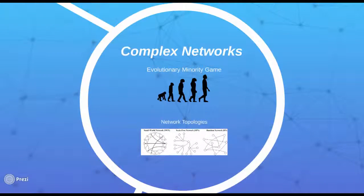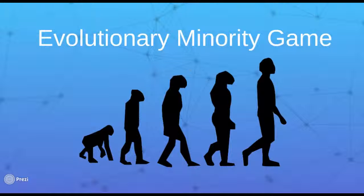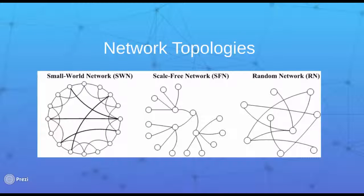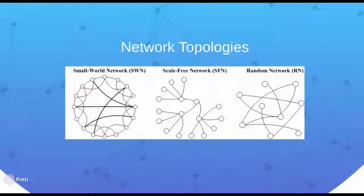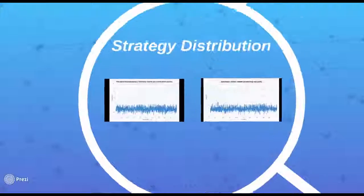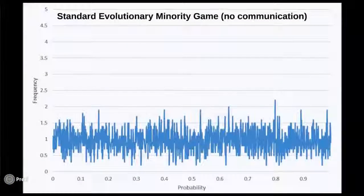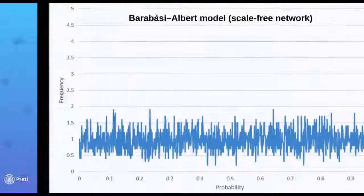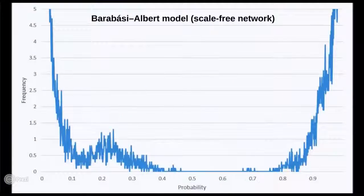In researching complex networks, we examined a variation of the minority game called the evolutionary minority game, which allows agents to alter strategies when they are not effective in helping them win. Using a library that creates network topologies such as small world, scale-free, and random networks, we connected agents who communicate with their most successful neighbors to better their own strategy. To measure how networks influence agent behavior, we can examine strategy distribution. In studies of the standard evolutionary minority game, agents slowly gravitate to polar strategies over time. Consistent with other research in this area, this process is found to occur at a faster rate in network scenarios.